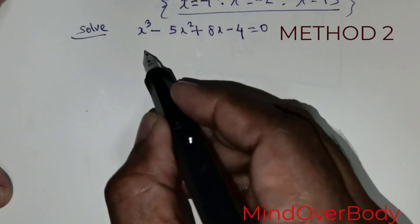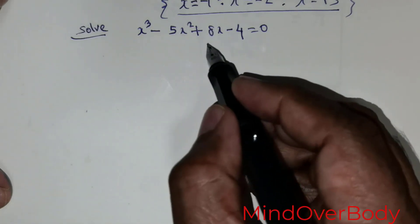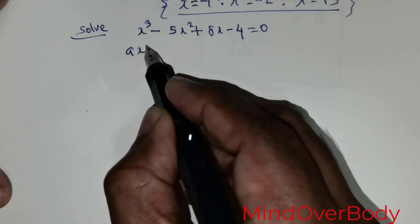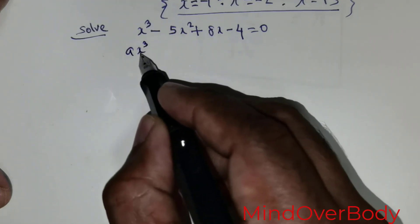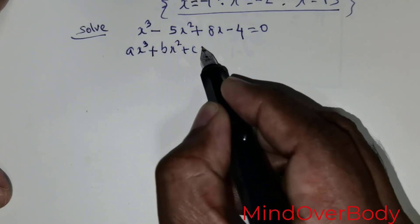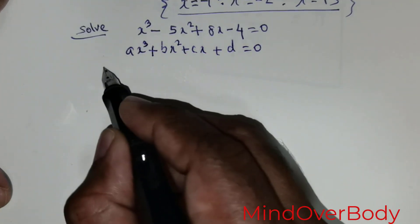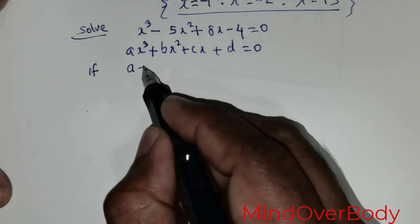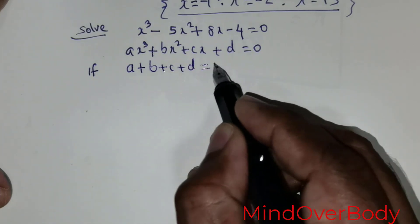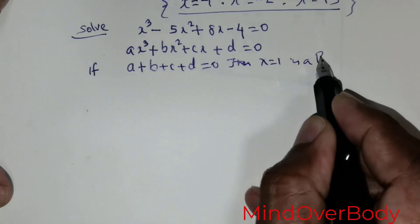This is the second method. We are given the cubic equation: x cubed minus 5x squared plus 8x minus 4 equals 0. I am going to compare it with the parent equation ax cubed plus bx squared plus cx plus d equals 0. If a plus b plus c plus d equals 0, then x equals 1 is a root.